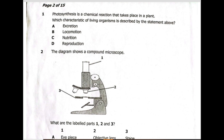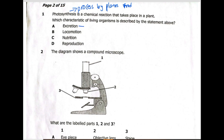Photosynthesis is a chemical reaction that takes place in a plant. Which characteristic of living organisms is described by this statement? If we look at photosynthesis, we are looking at the process by which plants manufacture their own food. Whenever we look at the intake of food, we are looking at nutrition. Excretion is getting rid of waste products. Locomotion is movement from one position to another. Nutrition here is the feeding, so this is our answer. Photosynthesis has to do with nutrition in plants.